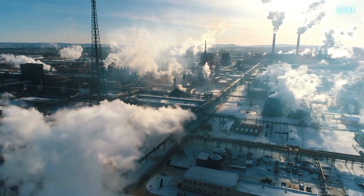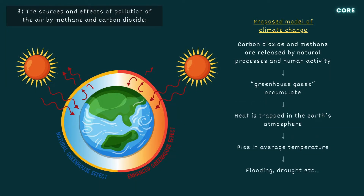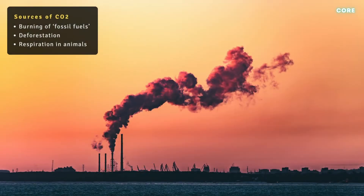You need to describe the sources and effects of air pollution. The predominant media-endorsed theory of climate change suggests that increased concentrations of certain gases in the atmosphere, including carbon dioxide and methane, are causing the Earth's average temperature to rise. This is referred to as the enhanced greenhouse effect. Both natural processes and human activities, such as burning fossil fuels, cause the greenhouse gases to accumulate in the atmosphere, trapping heat radiation from the sun. Sources of carbon pollution include the burning of coal,